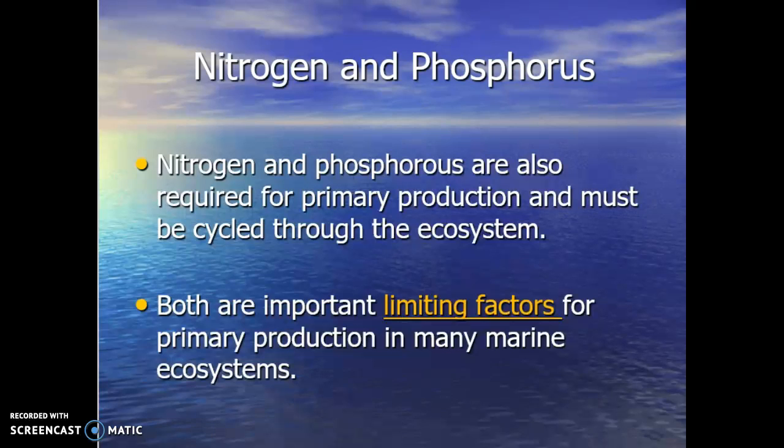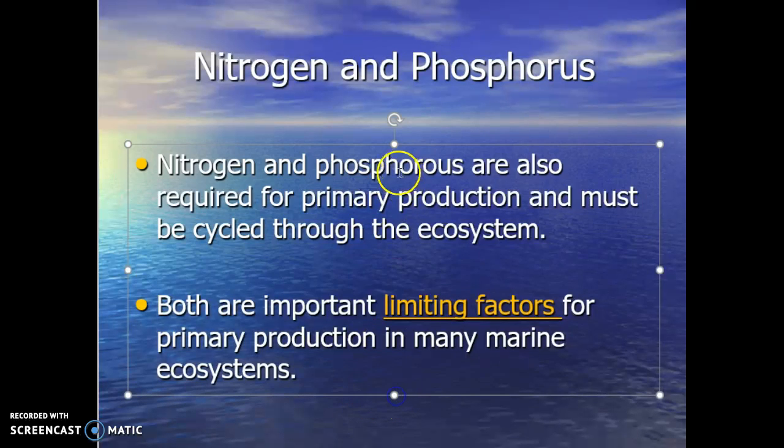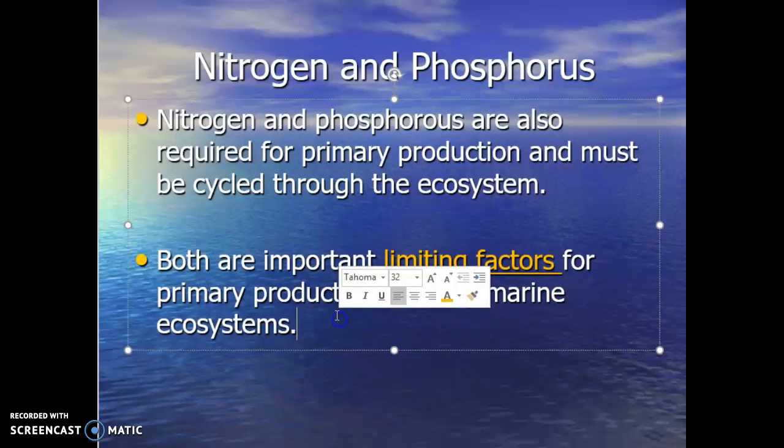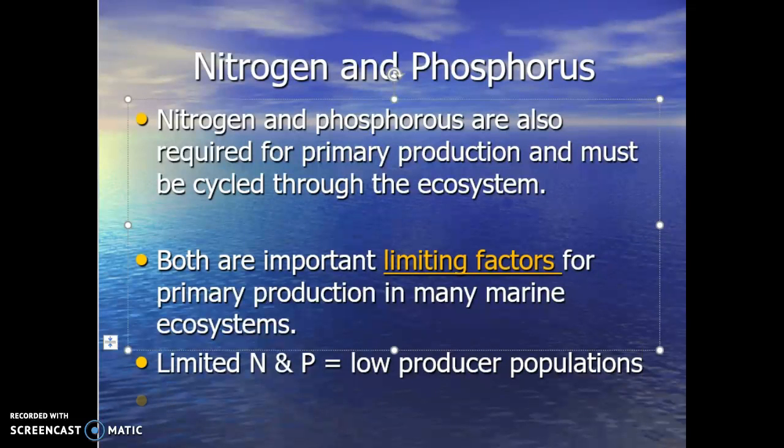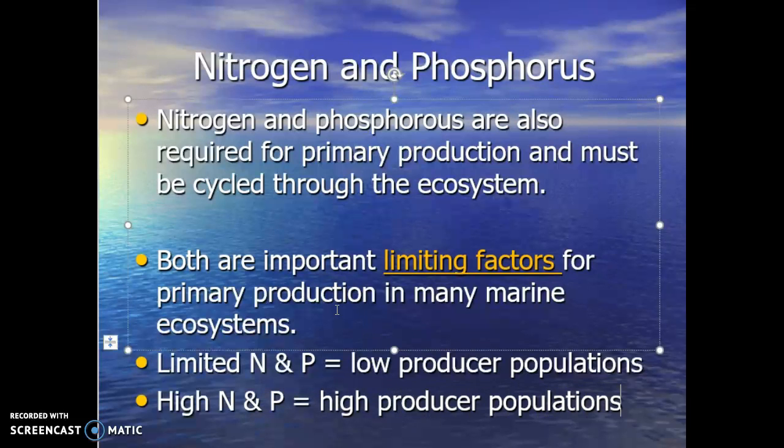Now you remember we talked about population growth earlier. I said when limiting factors are removed, populations grow exponentially. So if a limited amount of nitrogen and phosphorus controls producer populations, primarily algaes, then limited nitrogen and phosphorus equals low producer populations. So then when we have high nitrogen and phosphorus, this equals high producer populations.